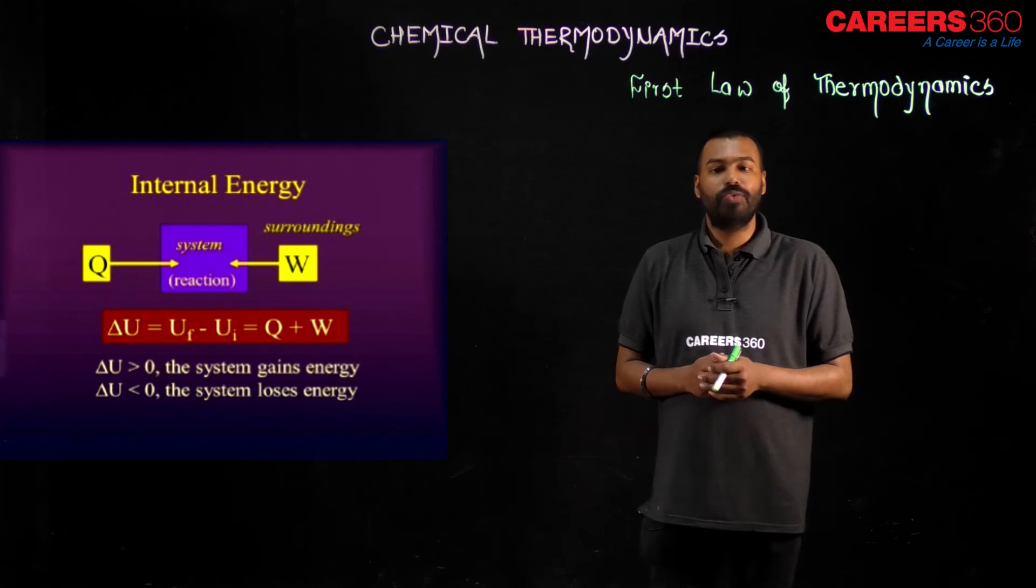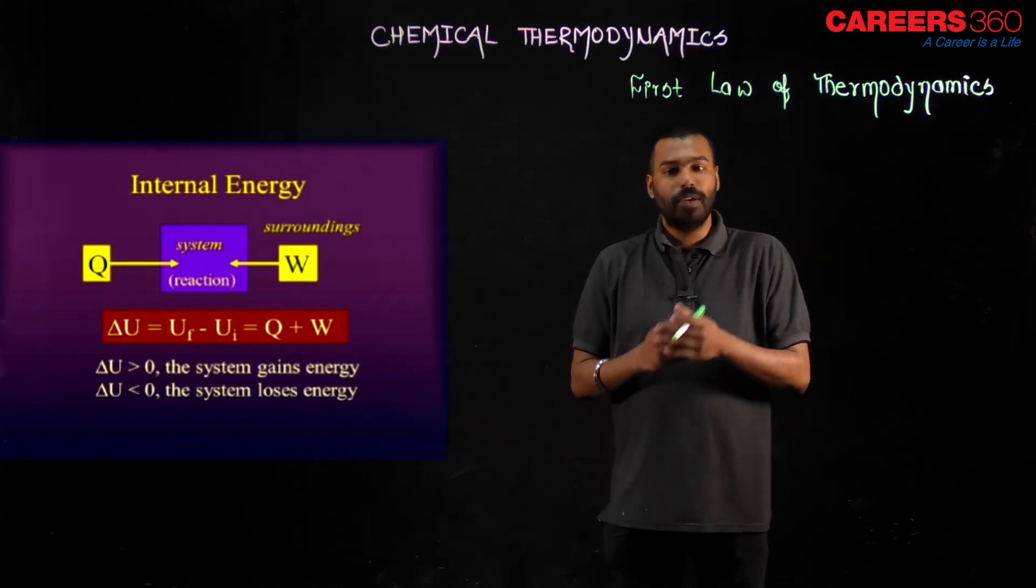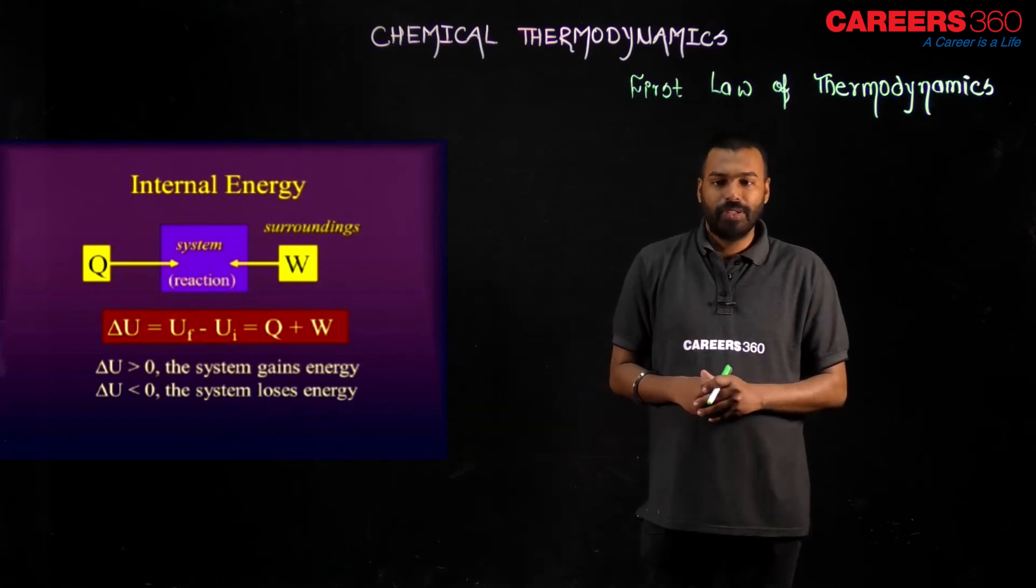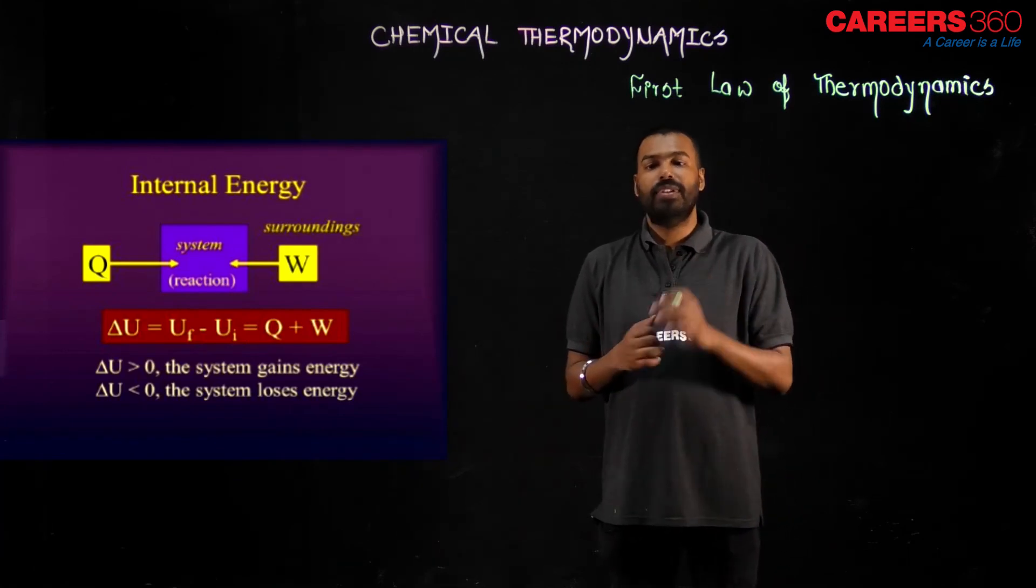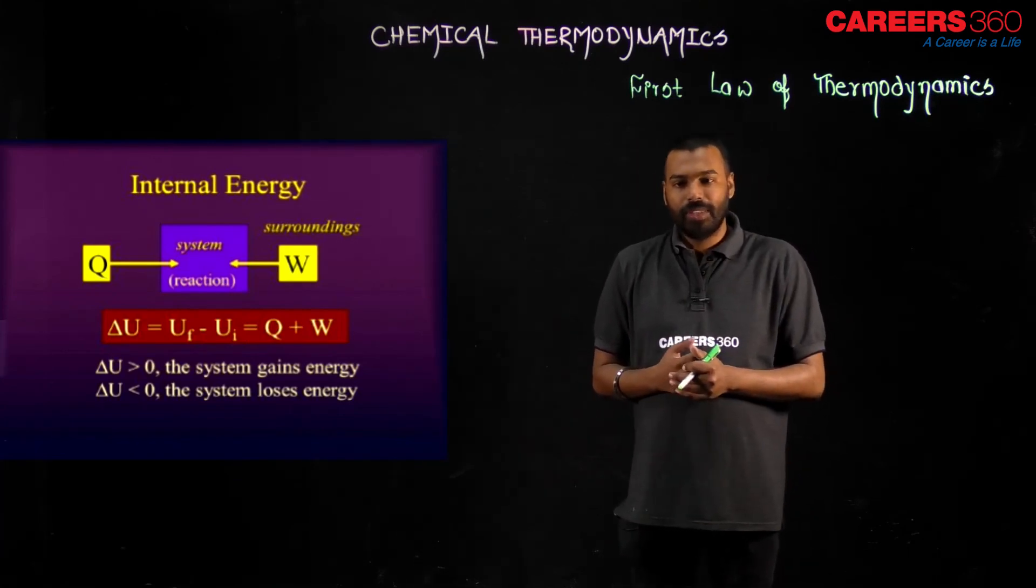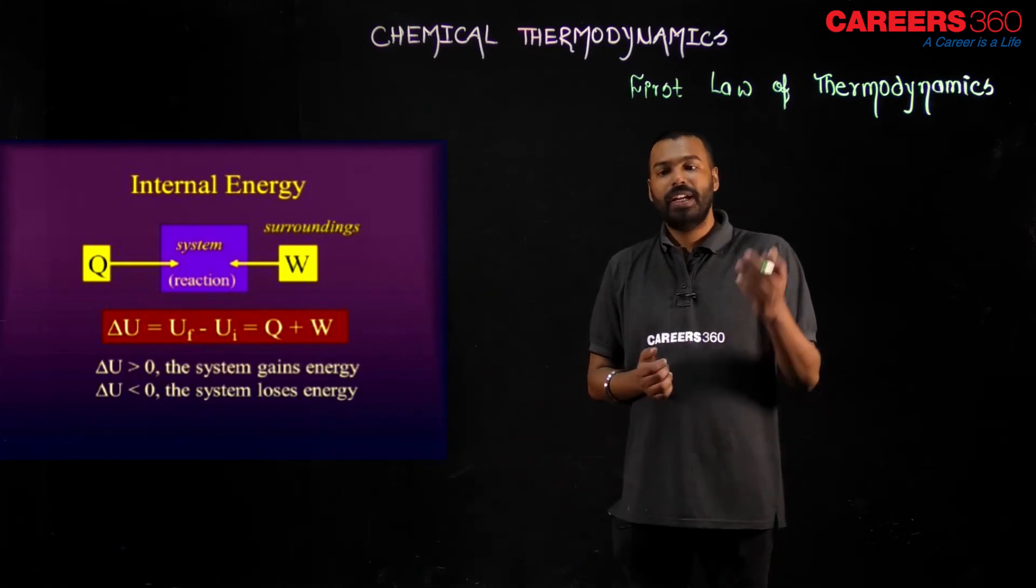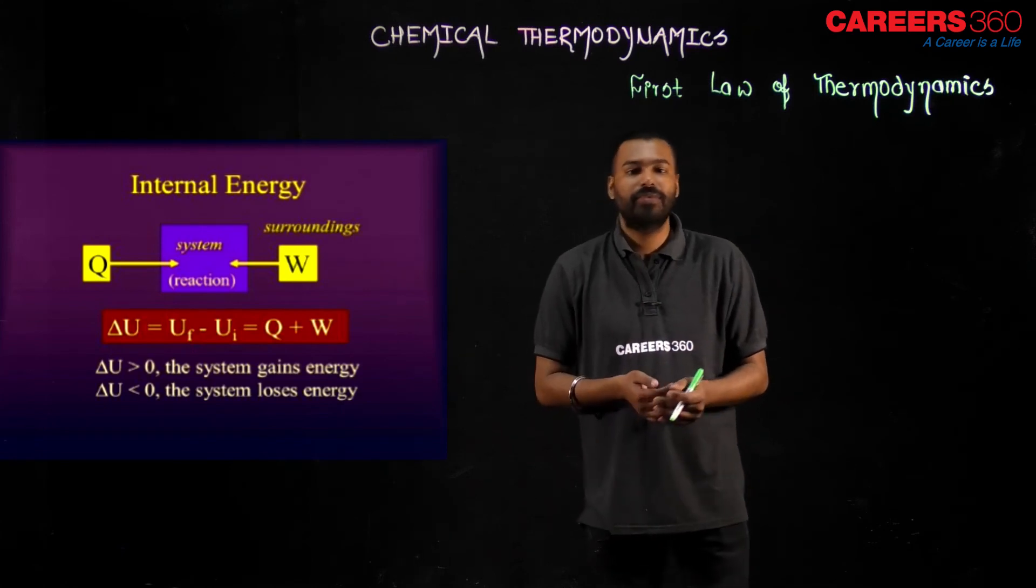equal to Uf minus Ui, U final minus U initial. I already explained what is U. So change in U equals Q plus W. Delta U, if greater than zero, then the system gains energy. If delta U is less than zero, the system will